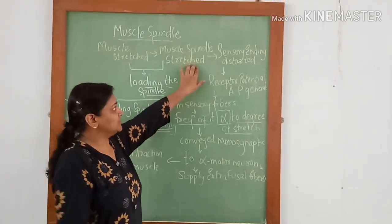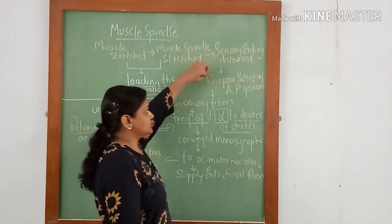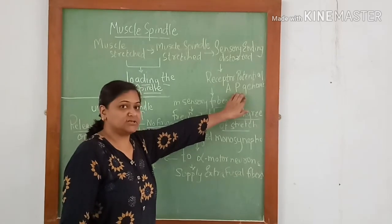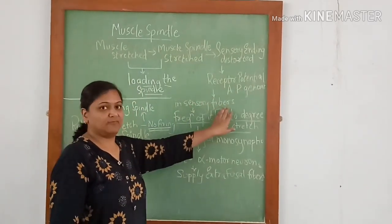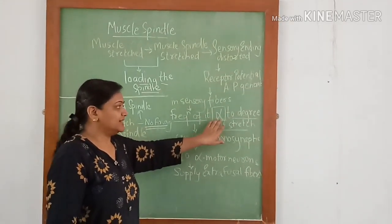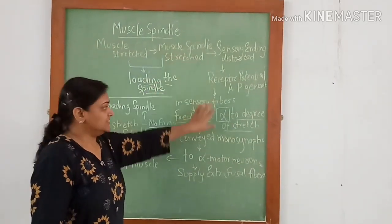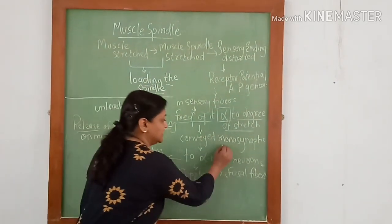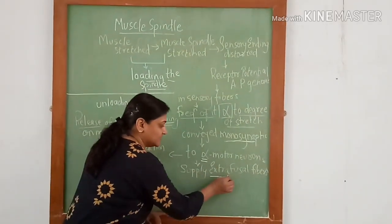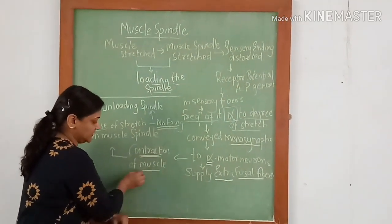With the stretch on the muscle spindle, the sensory ending gets distorted, which leads to generation of receptor potential and action potential generation occurs in the sensory fibers. The frequency of the action potential is directly proportional to the degree of stretch on the muscle spindle. This is conveyed monosynaptically to the alpha motor neurons which supply the extrafusal fibers and leads to contraction of muscles.